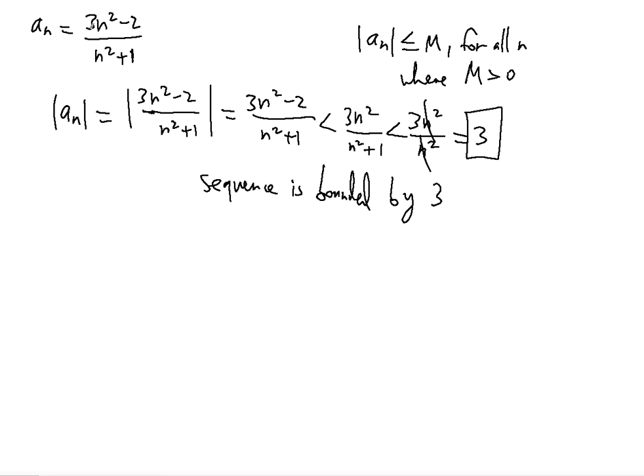Well, in this case it's going to be its limit value. Because if you take the limit of this sequence as n approaches infinity you will see that the limit value will be 3. So in this case it's the limit value that's also the boundary value.